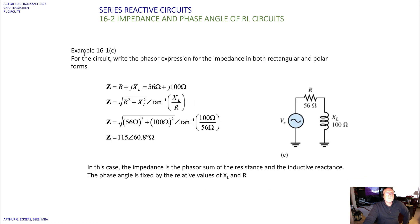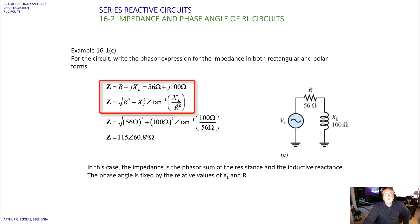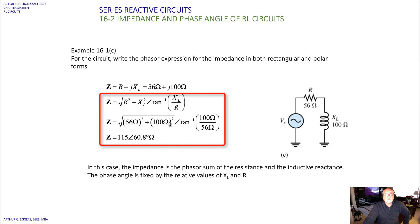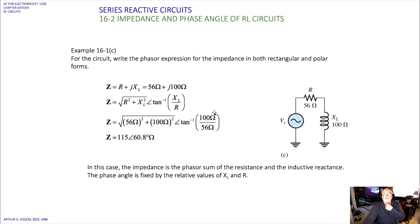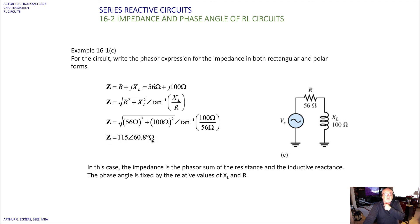Now for the combined circuit, we add the 56-ohm resistor to the 100-ohm inductive reactance. In rectangular form: 56 ohms plus J100 ohms. Converting from rectangular to polar using the Pythagorean theorem and inverse tangent: the square root of 56 squared plus 100 squared, and the inverse tangent of 100 over 56. The ohmic values cancel in the tangent, giving us 115 at an angle of 60.8 degrees ohms.